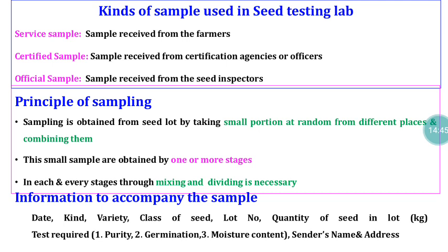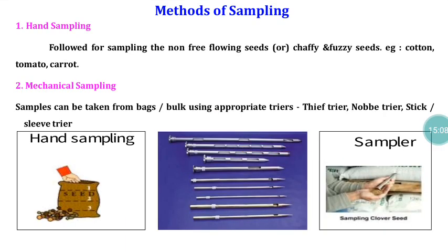All primary samples are combined to form the composite sample, and then mixing and dividing is done to get the prescribed quantities of submitted and working samples. Once the submitted sample is arrived at, it should be packed and labeled as per the Indian Seed Act 1966. The label should carry the crop name, variety, class of seed, seed lot number, quantity of seed in lot, tests required (purity, germination, moisture content), and the sender's name and address.